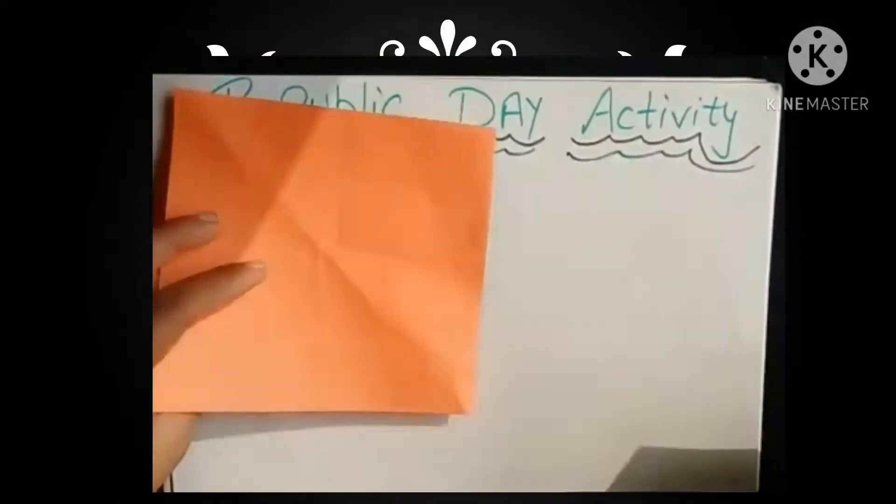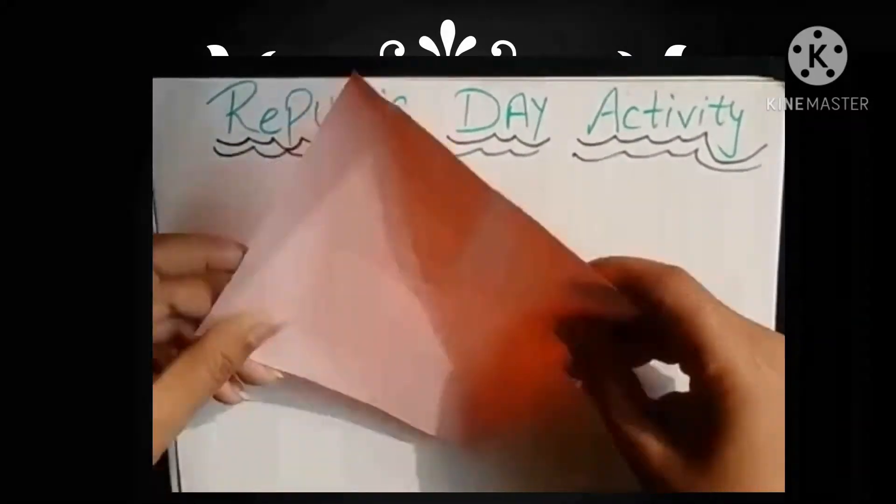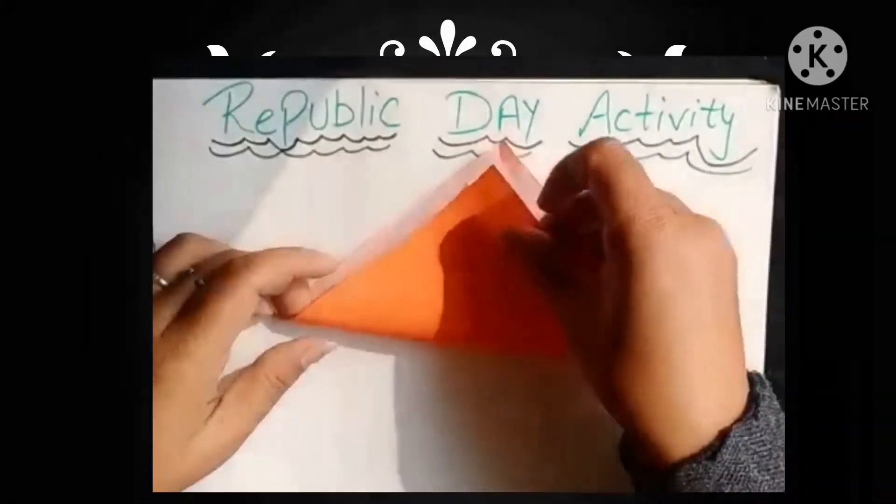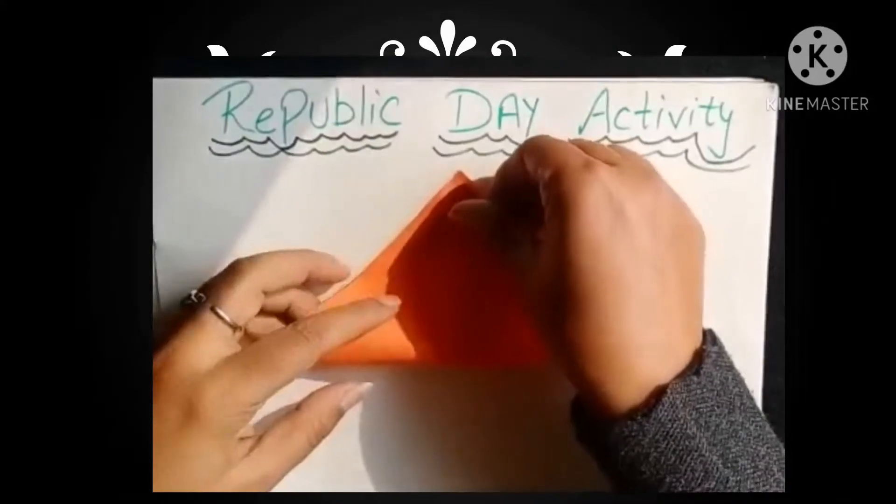Now I will make paper folding activity. Dear students, first we have a paper. We have to turn this corner to this corner. We have to place this corner.